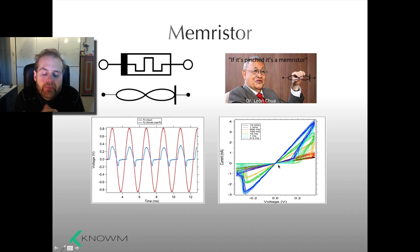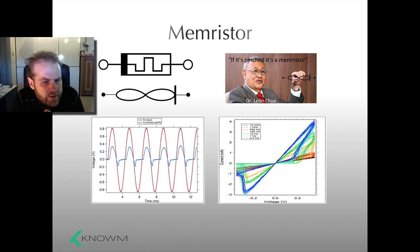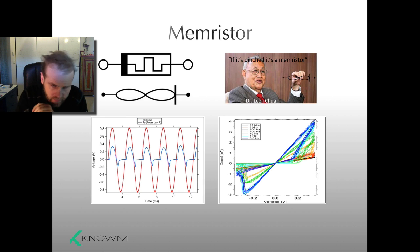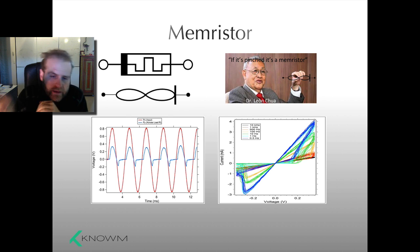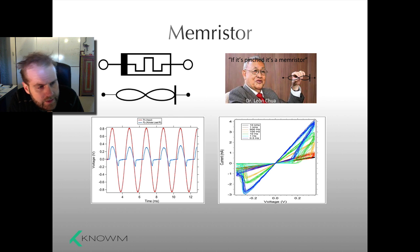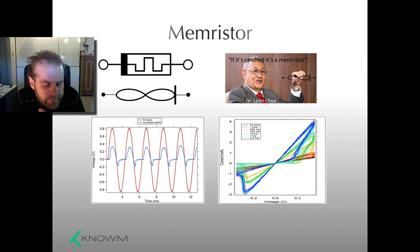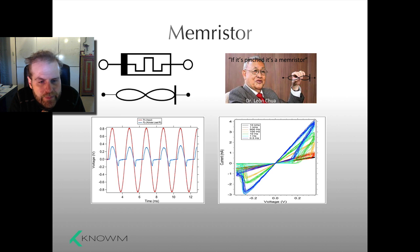It goes through the origin. This means that it's not storing energy. So if we try to do this for, say, a capacitor or an inductor, we'd end up sweeping out circles. The fact that it goes through the origin implies that there isn't energy stored in this device. It's storing something — information — about how it was used. But it's not an energy storage device.